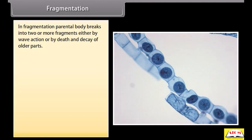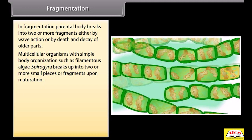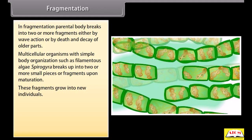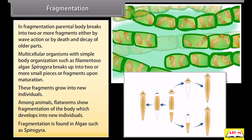In fragmentation, the parental body breaks into two or more fragments either by wave action or by death or decay of older parts. Multicellular organisms with simple body organizations, such as filamentous algae Spirogyra, break up into two or more small fragments upon maturation. These fragments grow into new individuals. Among animals, flatworms also show fragmentation of the body, which develops into new individuals.